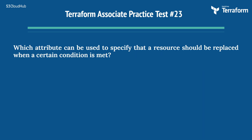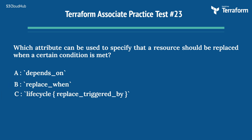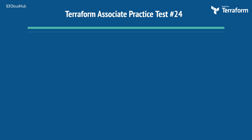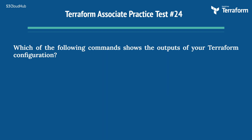The twenty-third question: which attribute can be used to specify that a resource should be replaced when a certain condition is met? Options are: A) depends_on, B) replace_when, C) lifecycle replace_triggered_by, D) force_replace. The right answer is Option C, lifecycle replace_triggered_by. The replace_triggered_by lifecycle attribute can trigger a resource replacement under certain conditions.